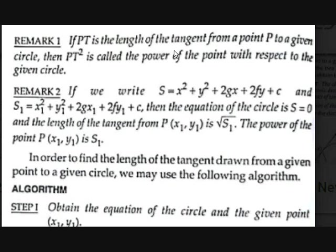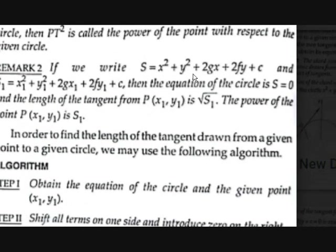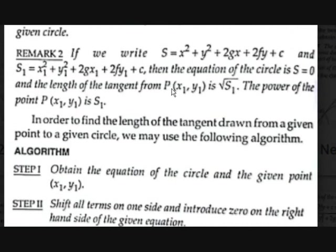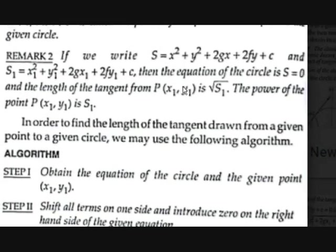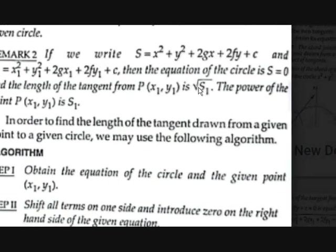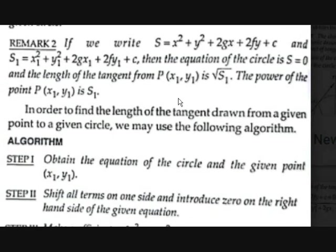If we write S as x²+y²+2gx+2fy+c, then the length of the tangent from the circle to P(x1,y1) is √S1, where S1 means substituting x1 and y1 in place of x and y in equation S. The power of the point is S1.